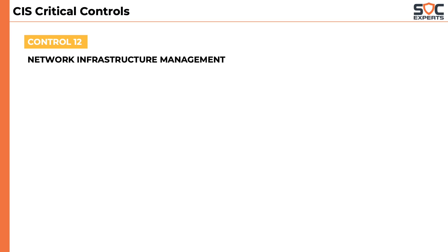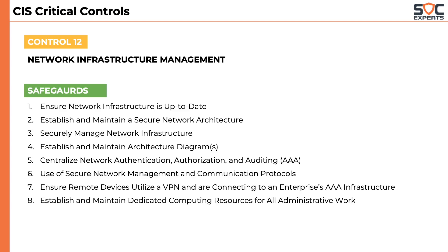The twelfth control is network infrastructure and management. It has eight safeguards that focus on keeping the infrastructure up-to-date, maintaining network architecture diagrams, using AAA, use of secure protocols, using VPNs, and maintaining separate computing resources for all administrative work.